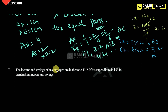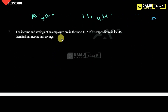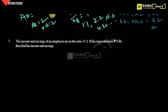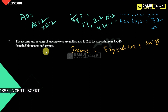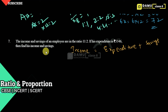Our next question: the income and savings of an employee are in the ratio 11 is to 2. If the expenditure is 5,346, find the income and savings. The formula is: income equals expenditure plus savings. Let income be 11x and savings be 2x. The expenditure is 5,346. So income minus savings equals expenditure: 11x minus 2x equals 5,346.